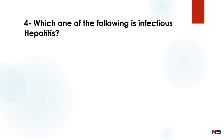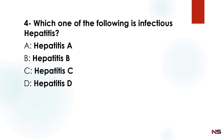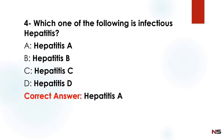Which one of the following is infectious hepatitis? Option A: Hepatitis A, B: Hepatitis B, C: Hepatitis C, D: Hepatitis D. The correct answer is Hepatitis A — Hepatitis A is infectious hepatitis.